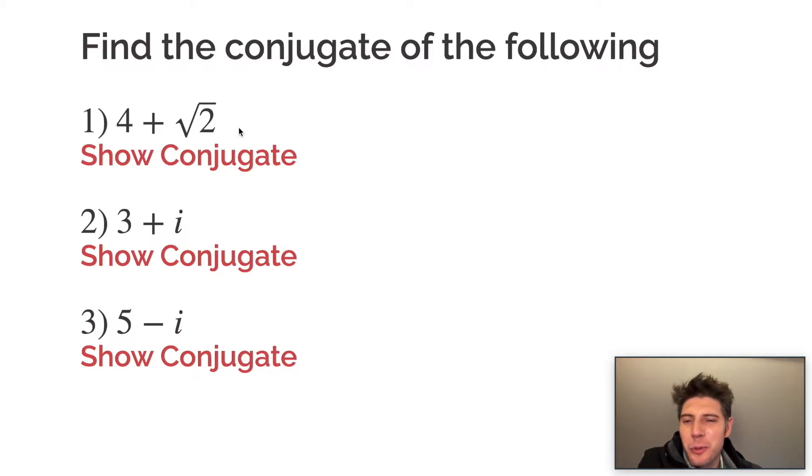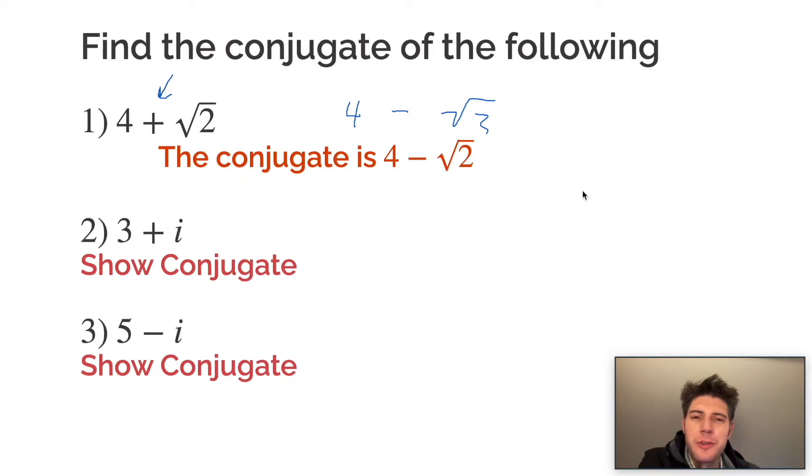Number one, find the conjugate of four plus root two. So all we do is rewrite the four and the root two, and we're going to do the opposite sign. So four minus root two is the conjugate of four plus root two, and that's the answer, four minus root two.